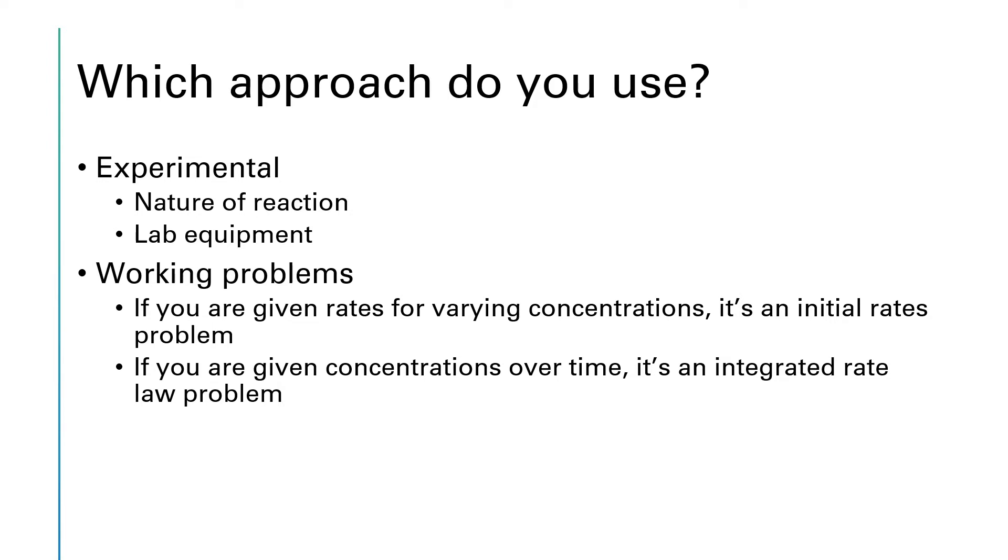So how do you know which approach to use? If this is an experimental problem, really the nature of the reaction itself and the equipment you have available to you in the lab will determine which approach you use for finding the rate law. If you're working problems, it's a little bit simpler. If your data looks like this, you've got the experiments, one, two, three,